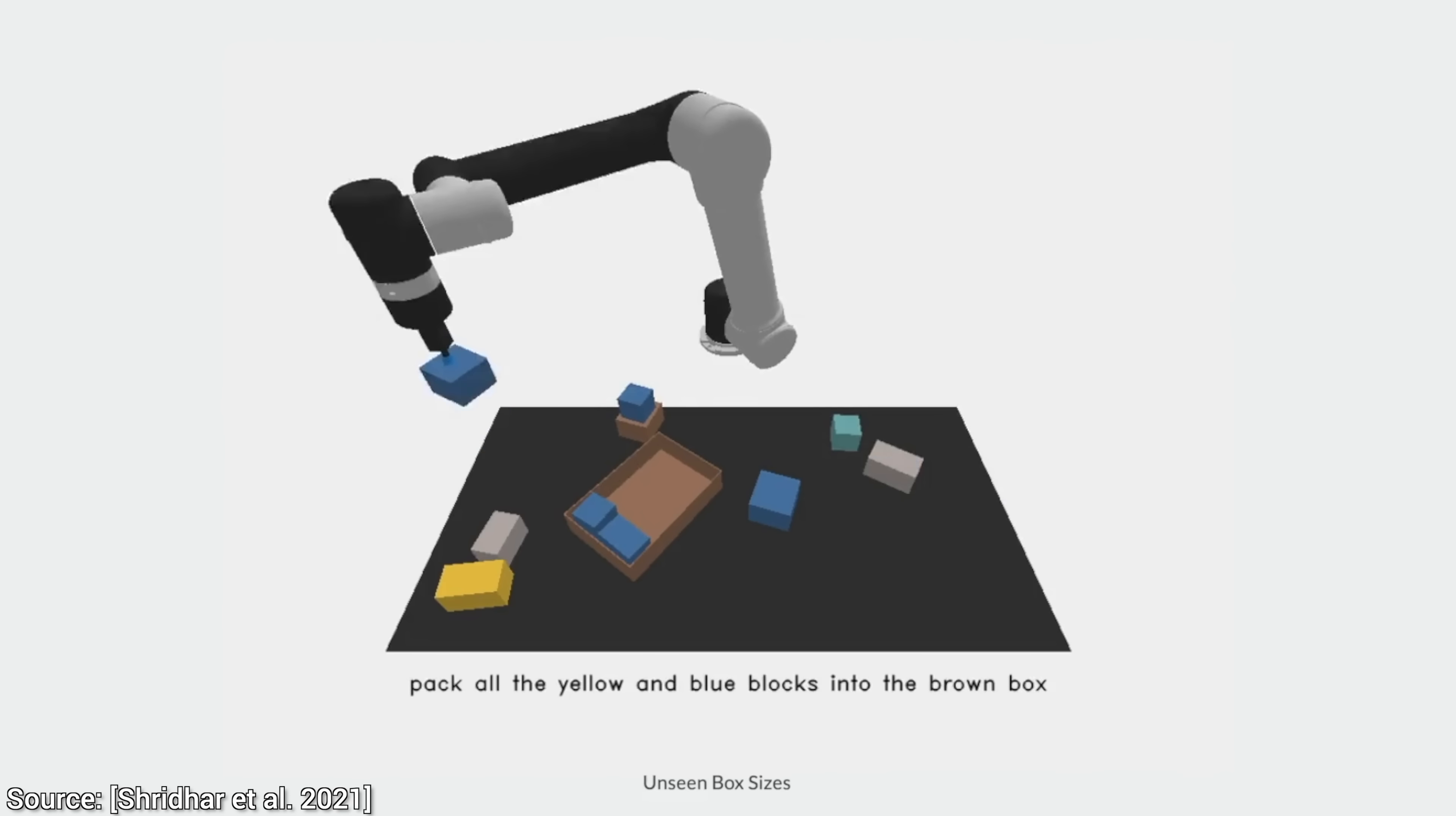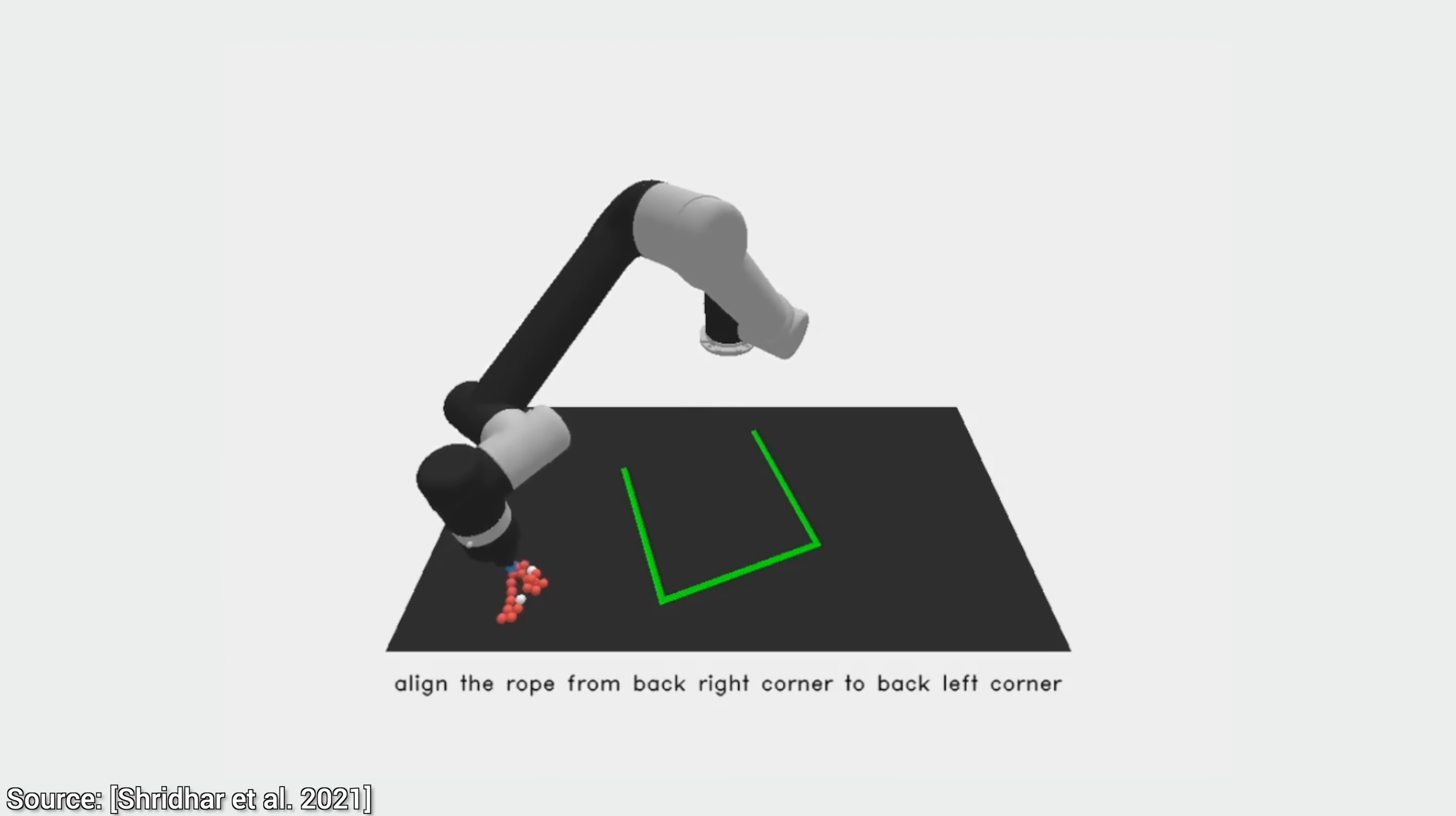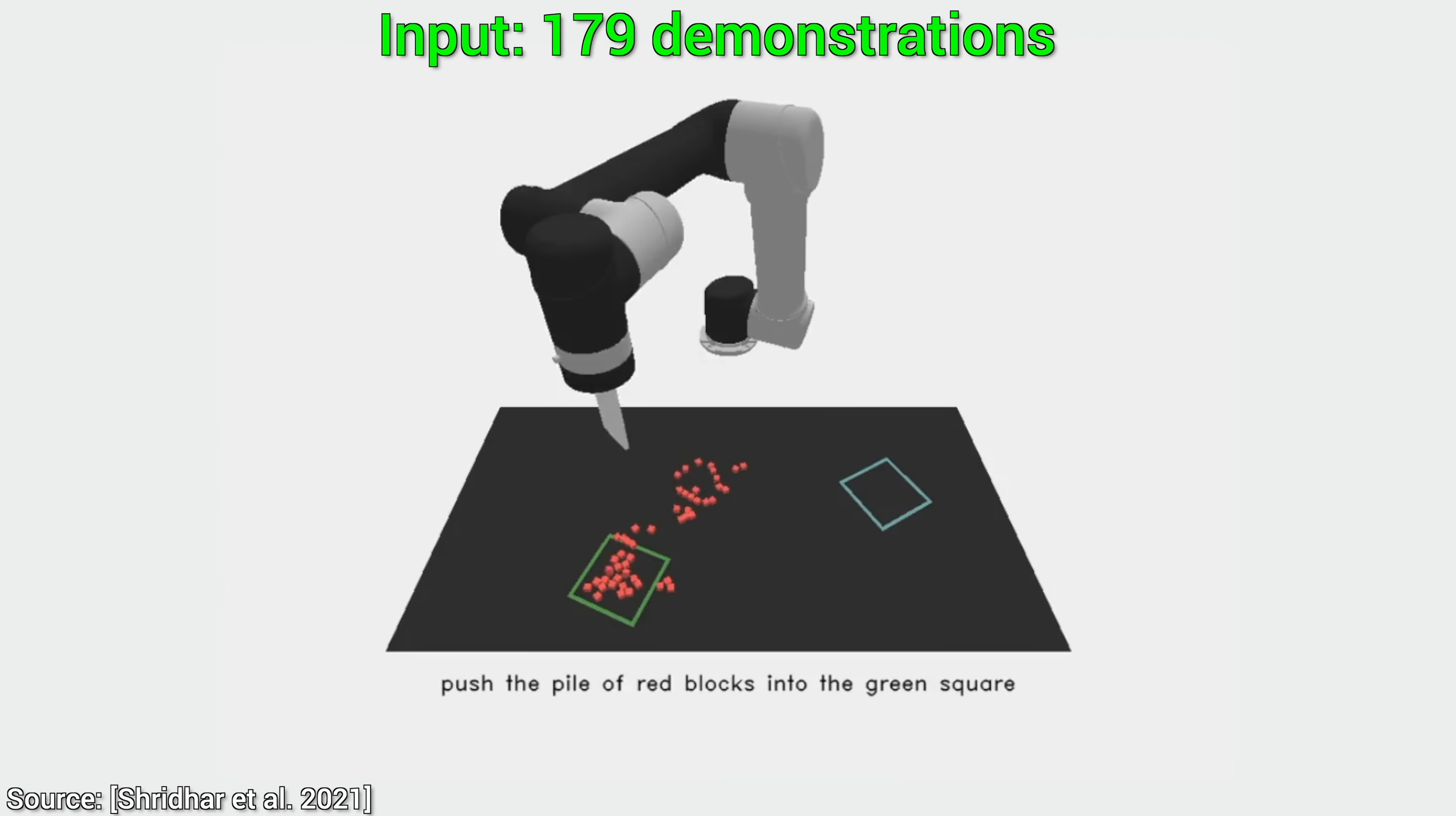And that is twist number one, learning happening from very few image-action pairs. How many exactly? Well, it learned to do this and more from only 179 image-action pairs. That, in the era of learning-based techniques, is almost nothing at all. Wow!